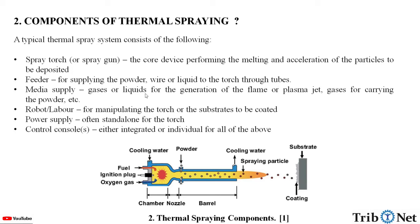Media supply consists of gases or liquids for the generation of the flame or plasma jet, and gases for carrying the powder. A robot or labor is used for manipulating the torch or the substrate to be coated. Power supply is often standalone for the torch.